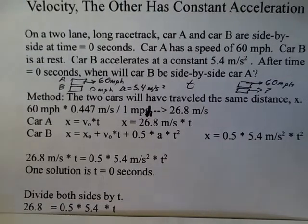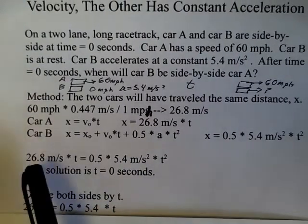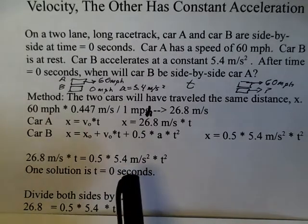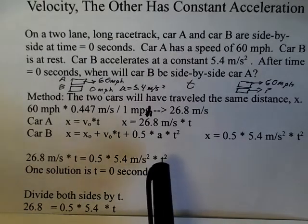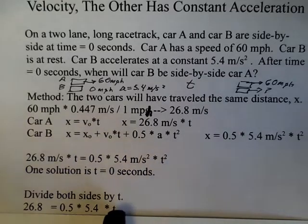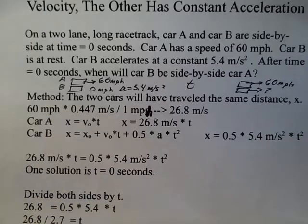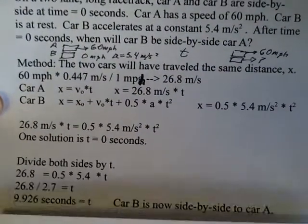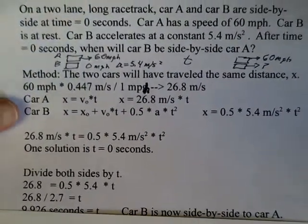So now we divide by t, and we produce an equation that is linear in time. I'm going to drop the units here. But 26.8 divided by t, we just get 26.8. On the right side, 0.5, 5.4, multiplied by t squared, you divide by t. I have t to the first power remaining. And 26.8, on the right side, I have 2.7, a half times 5.4. So I'm dividing both sides by 2.7, produces the time. And that time number is 9.926 seconds.